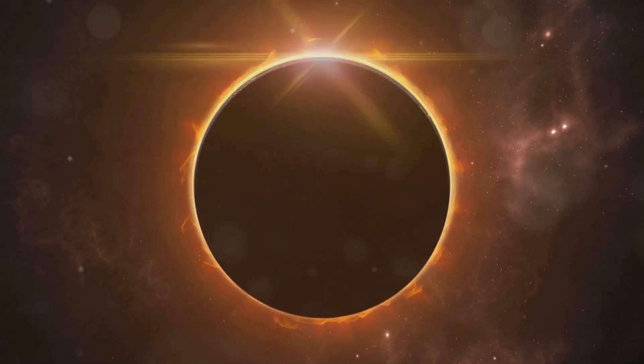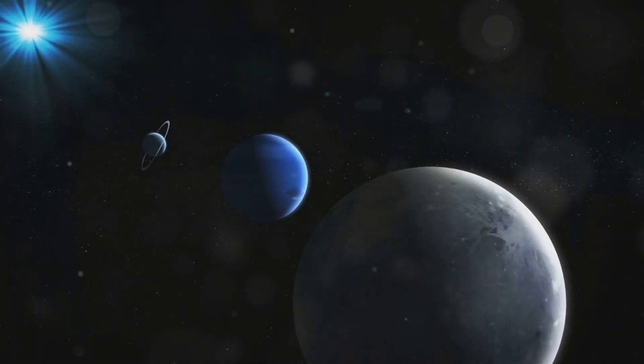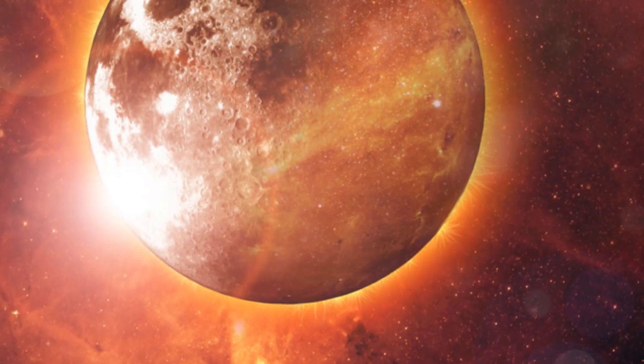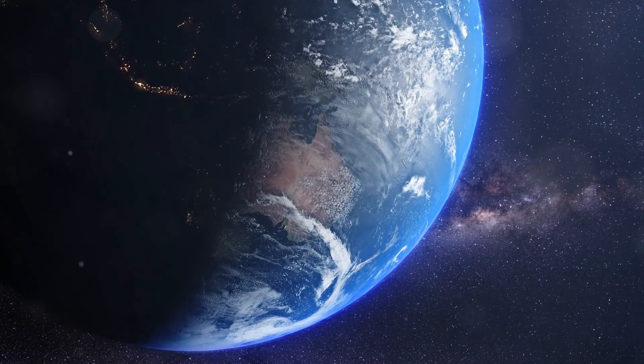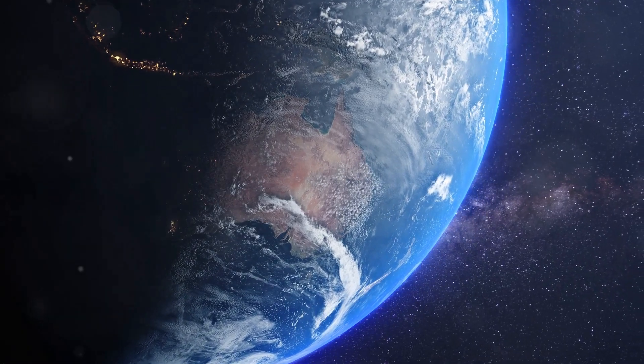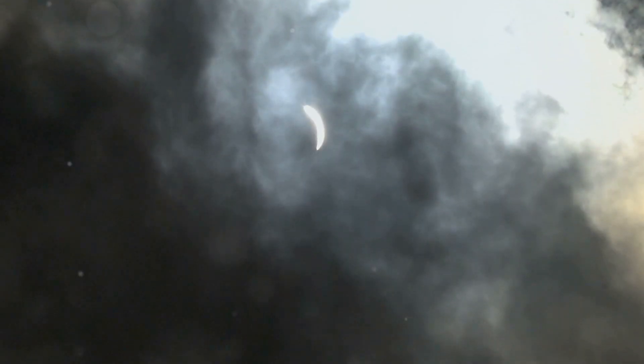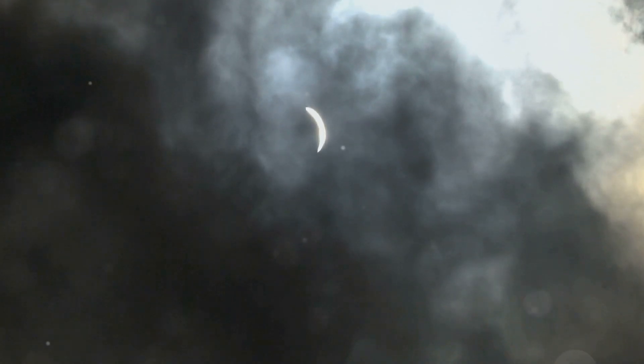You might wonder why we don't see a solar eclipse every month if the moon goes around the Earth. That's a great question. You see, the moon's path around the Earth is slightly tilted. This tilt is about five degrees relative to the Earth's orbit around the Sun.